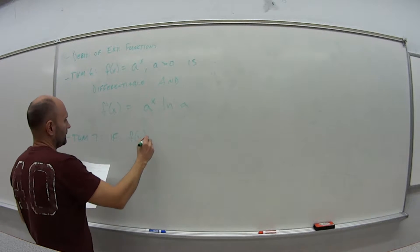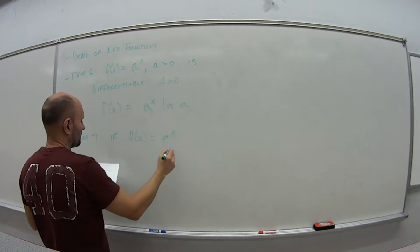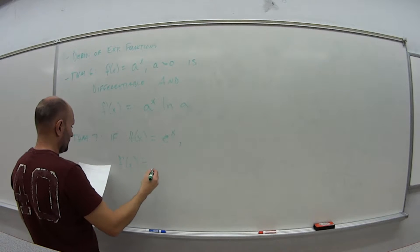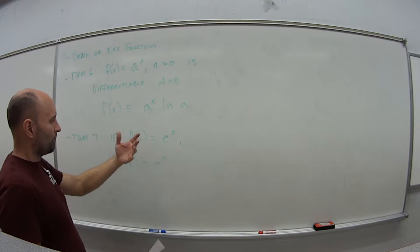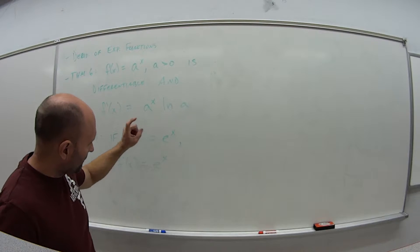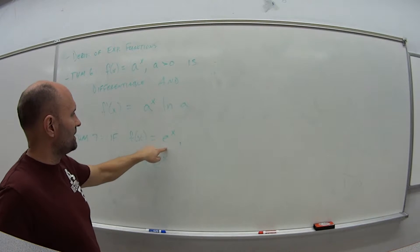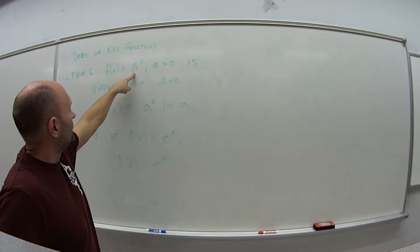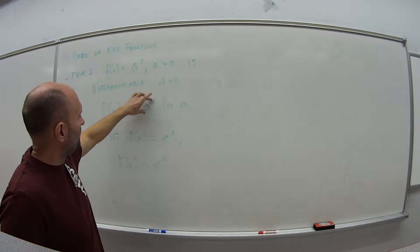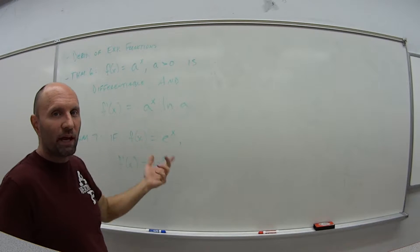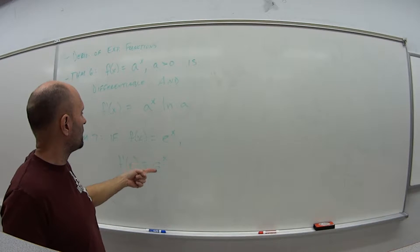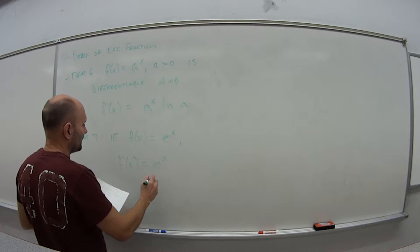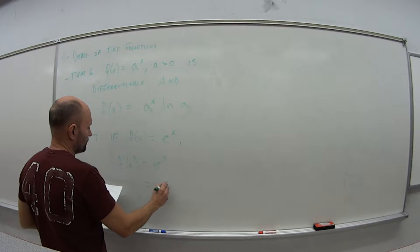We also have Theorem 7, which says that if our function is e to the x, then f'(x) is just e to the x back. It makes sense — if we look back at Theorem 6, the derivative of e to the x is e to the x times the natural log of e. The natural log of e is 1, so the derivative of e to the x is just itself.